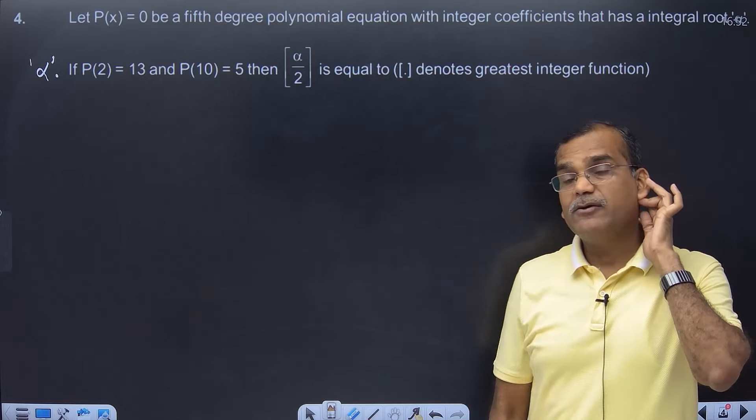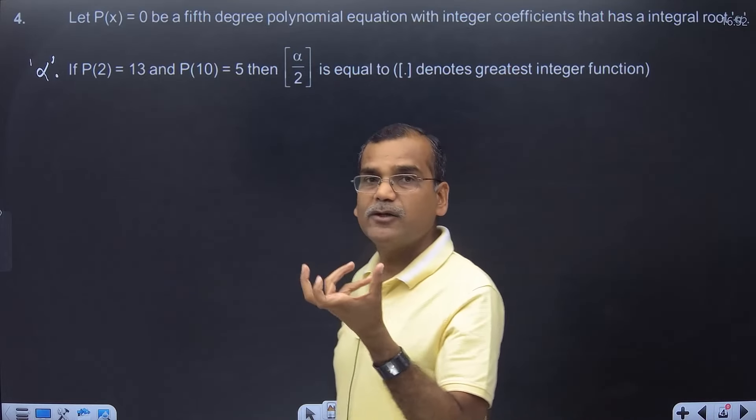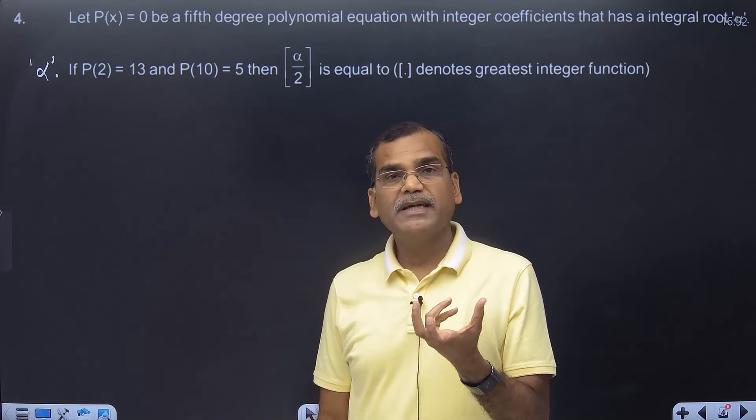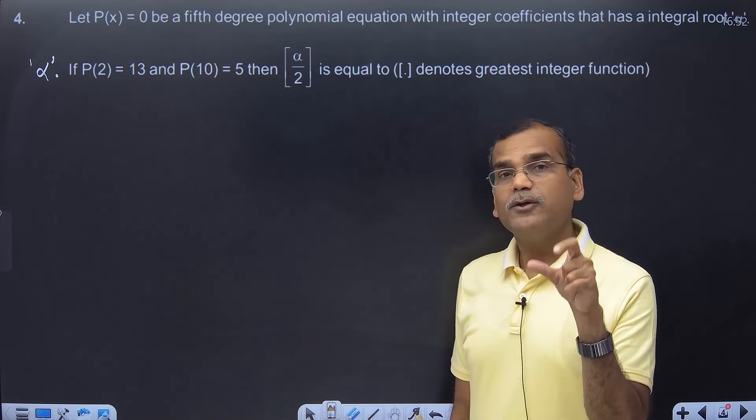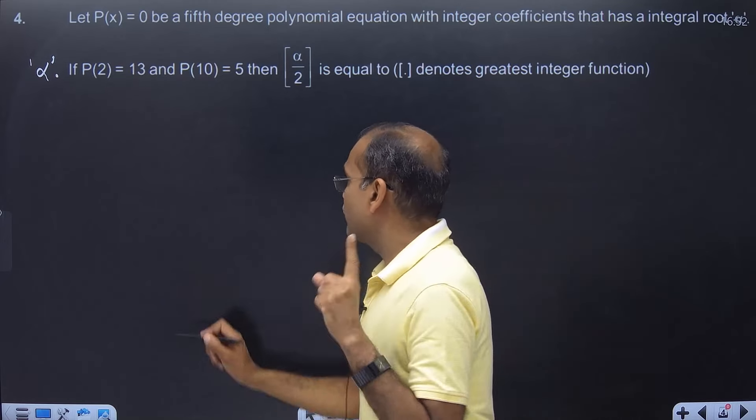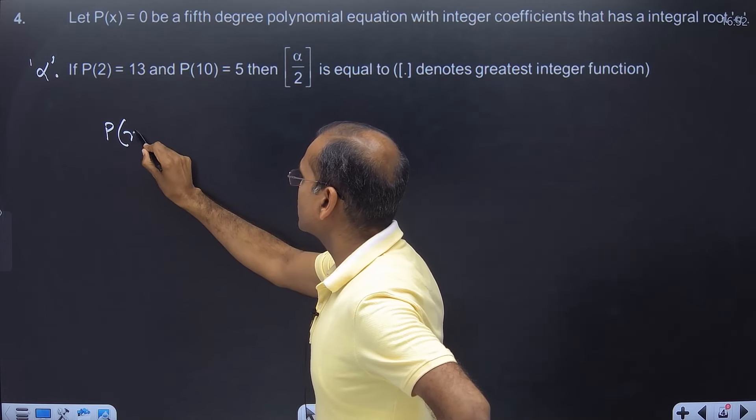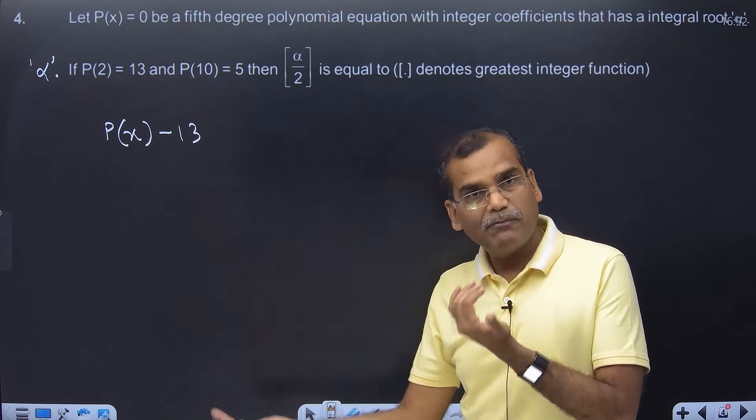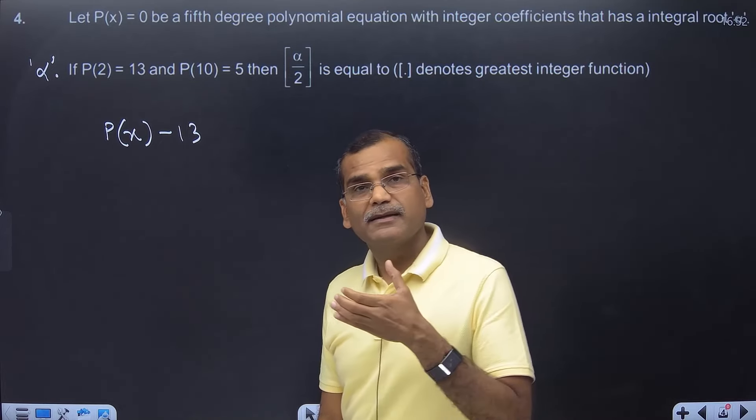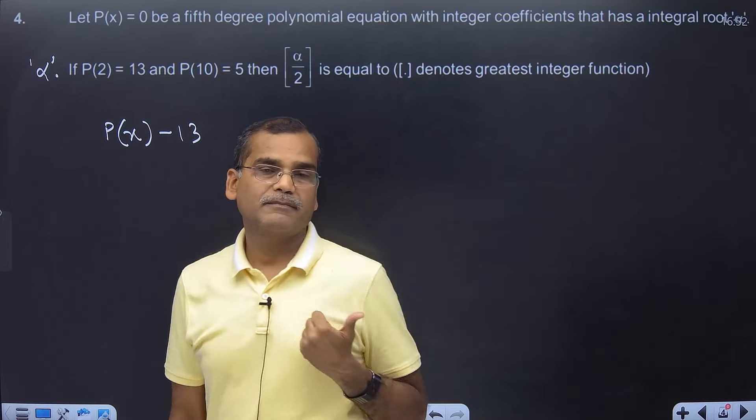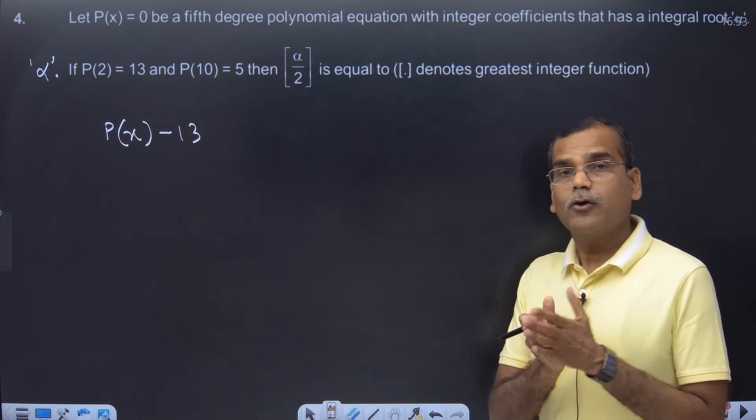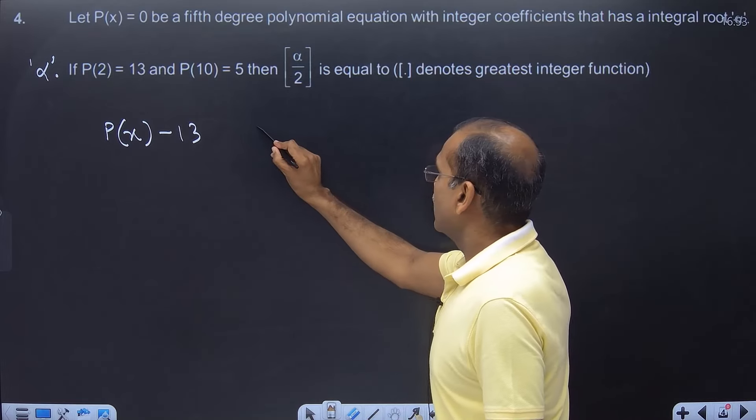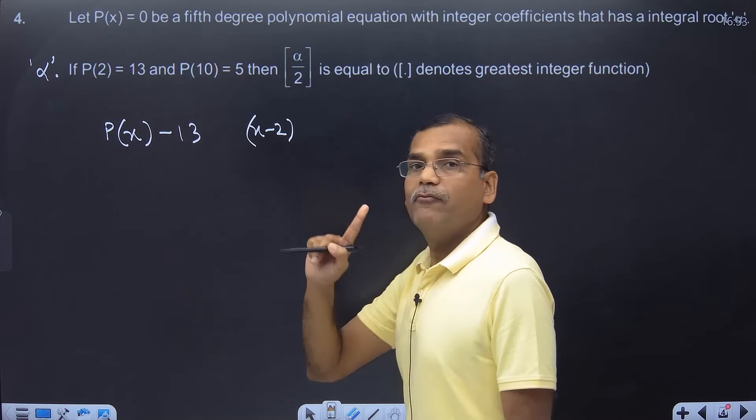My usual preference is to work with equations equal to 0. So instead of P(2) equals 13, I write P(2) minus 13 equals 0. If you do that, you will definitely say that I can write this as P(x) minus 13, it will be a polynomial, and easily you will say that 2 is the root of this function. In polynomials, you understand that root means factor, so x minus 2 is the factor.